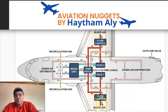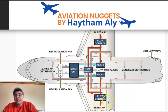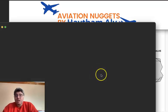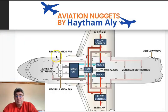We need the cabin and cockpit temperature to be within a comfortable range — like 18, 22, or 25 degrees Celsius. So the bleed air must be regulated from 150–200°C down to around 20–25°C. The air conditioning packs are responsible for this basic temperature regulation.